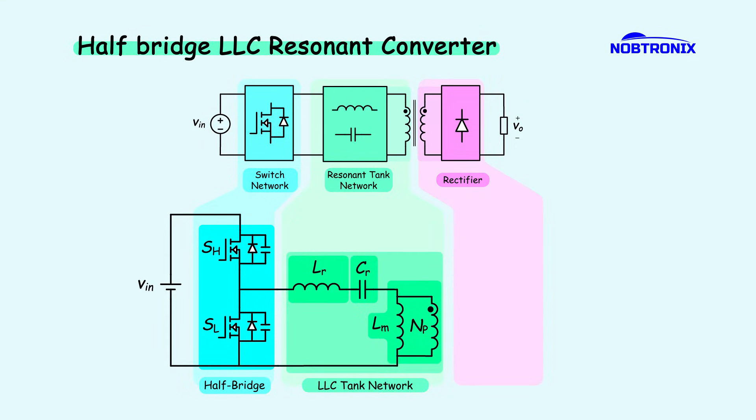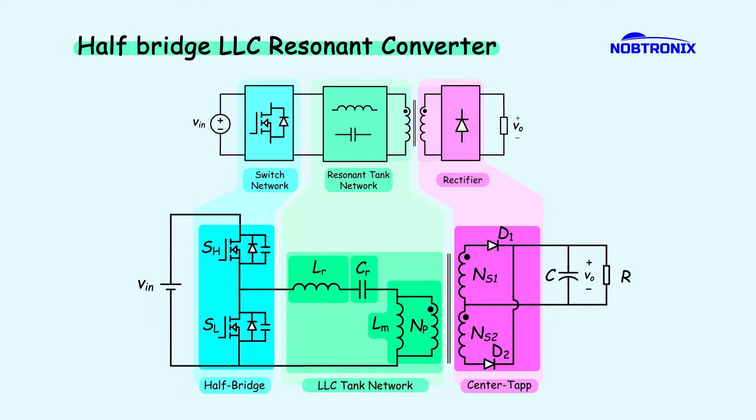For output rectification, a center-tapped rectifier is used, utilizing a center-tapped transformer winding and two diodes to efficiently convert AC to DC. By integrating these elements, a half-bridge LLC resonant converter is formed, one of the most widely used topologies in power electronics.